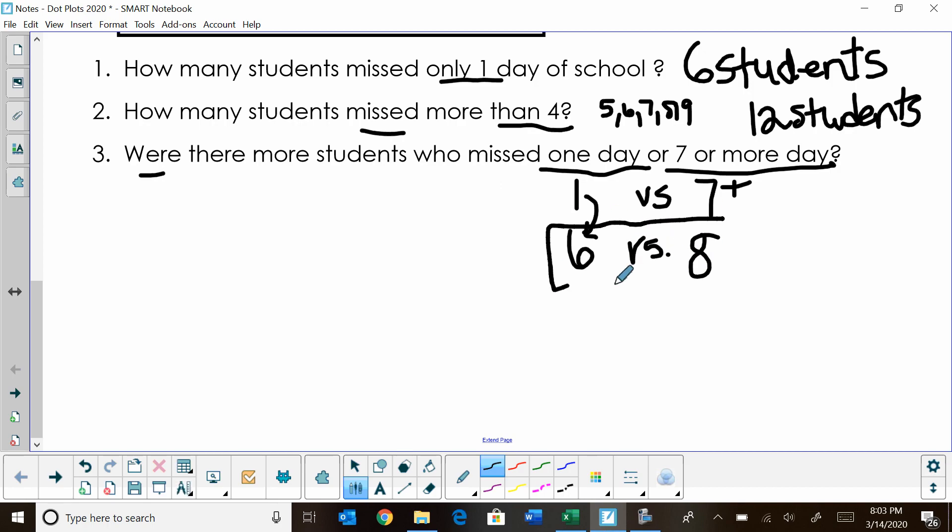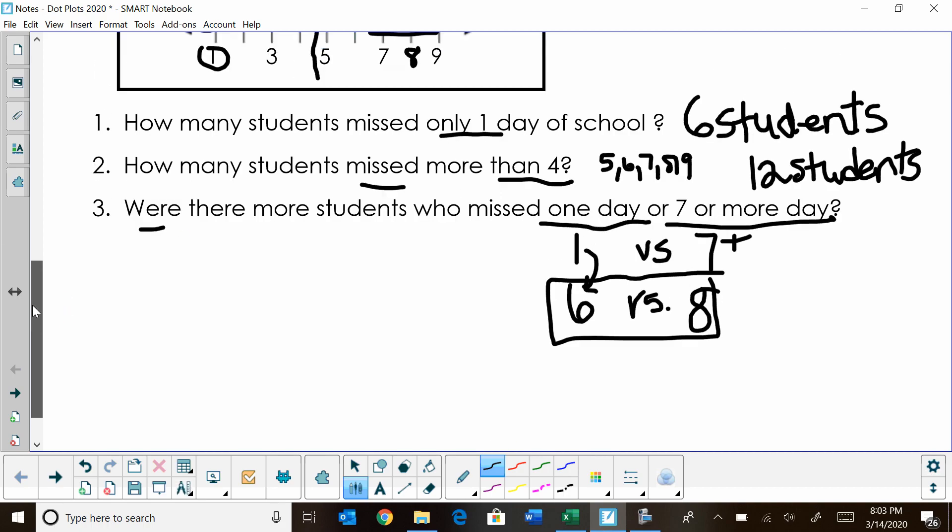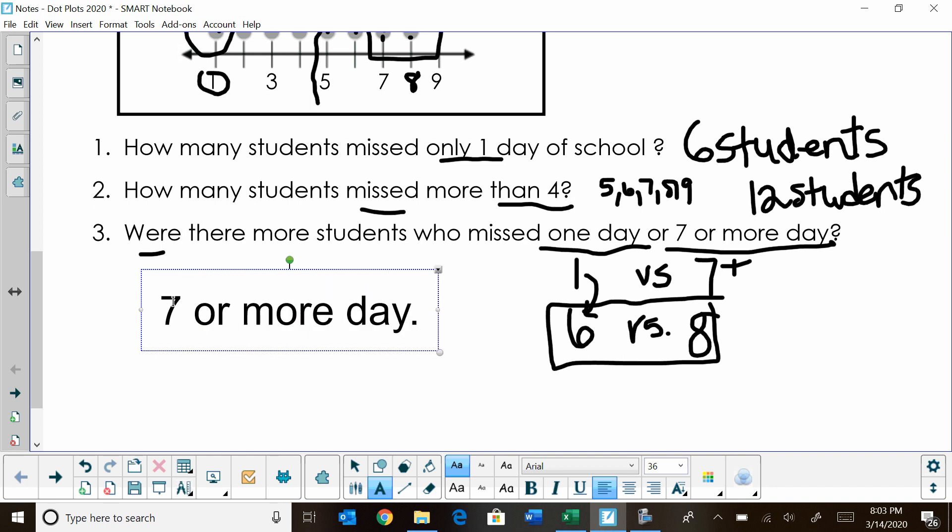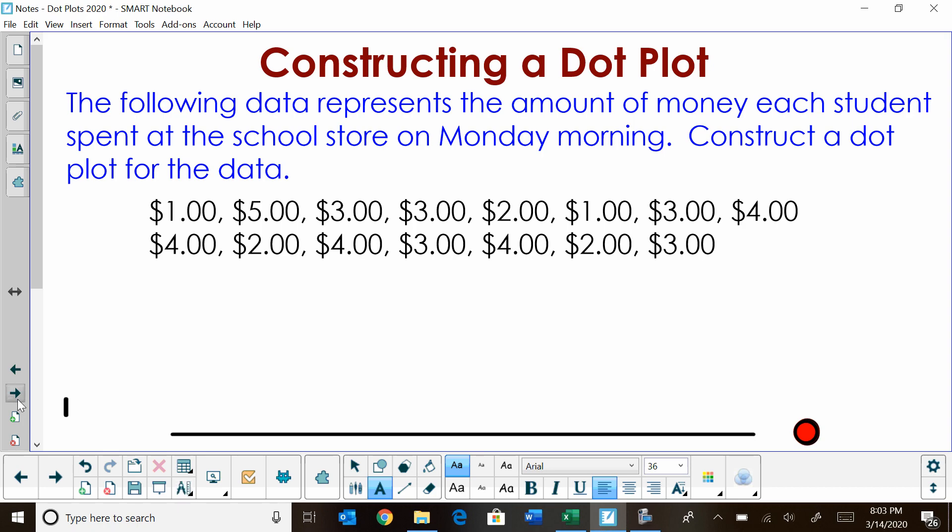And that's how you read your dot plot. Were there more students who missed one day or more students who missed seven or more days? The answer would be seven or more days of school. There were more students because there were eight. Now we're going to look at constructing a dot plot. The following data represents the amount of money each student spent at the school store on Monday morning. Construct a dot plot for the data.